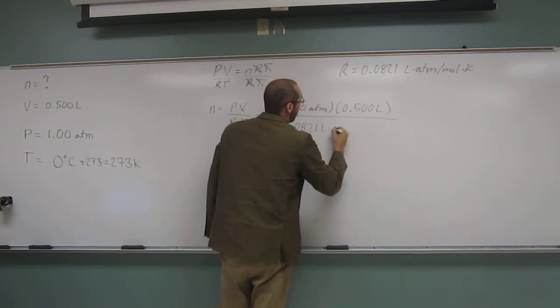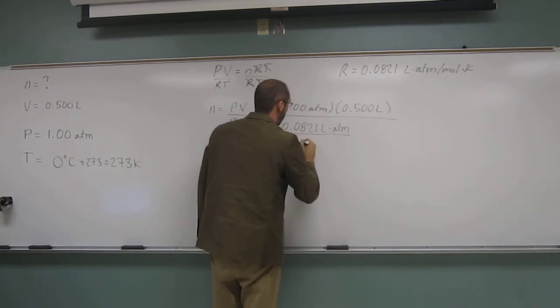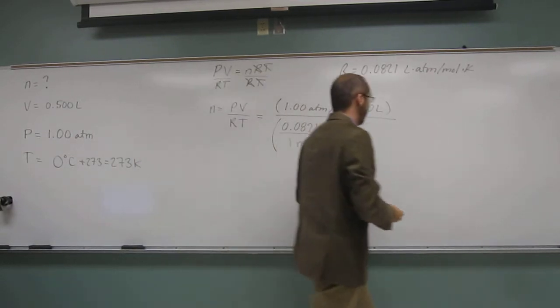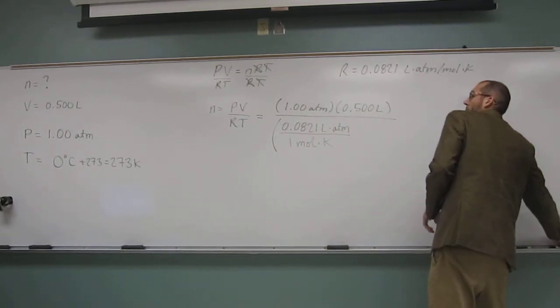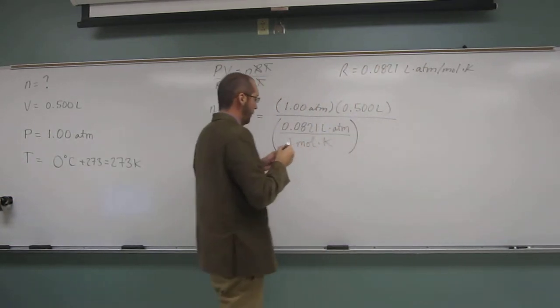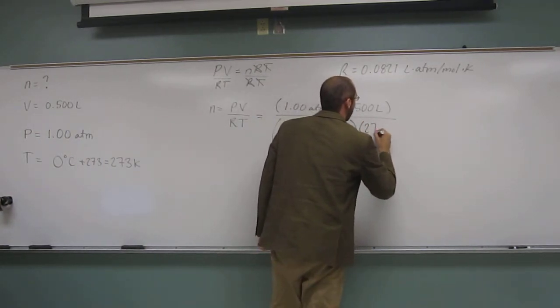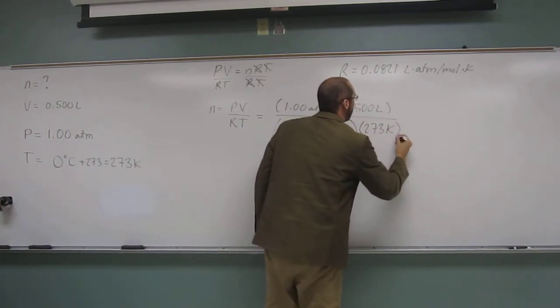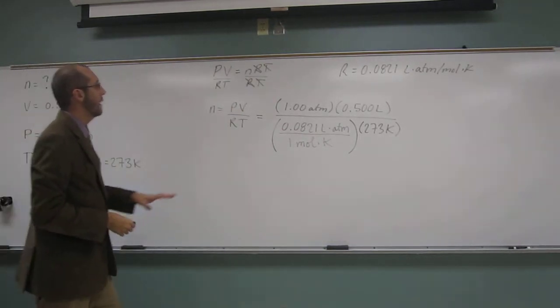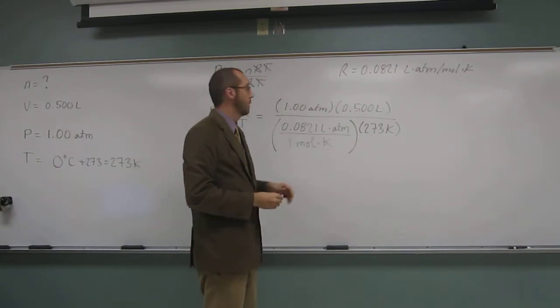0.0821 liters ATM divided by 1 mole Kelvin. Both of my pens are dying. Okay, so like that. And then the temperature, of course, is 273 Kelvin. Okay. So, hopefully now, I think this is an easier way to see how we cancel out our units.